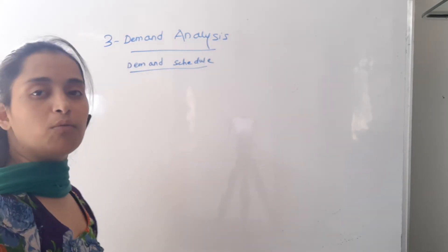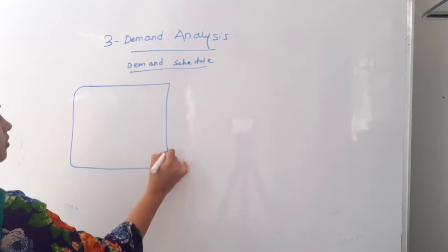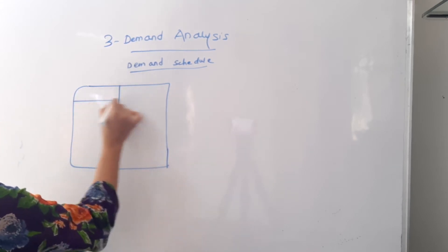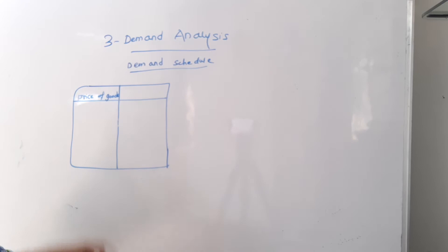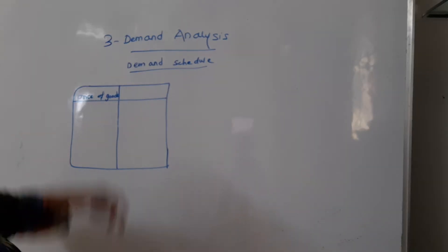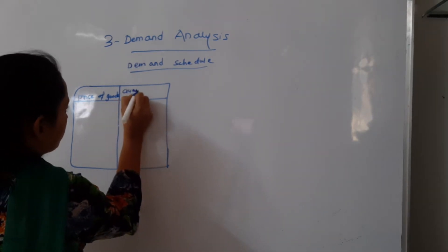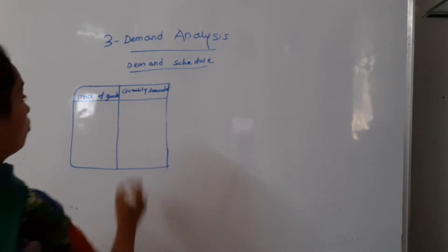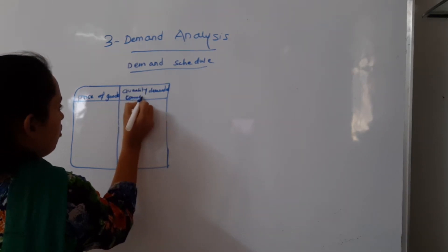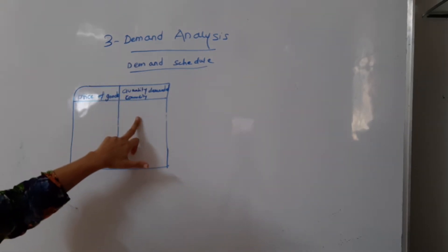Aayye dekhte hai, isi cheez ko hum log tabular format mein. For example, this is a table with two columns: prices of goods or commodity on one side, and quantity demanded on the other. Yaaha pe aajaati hai meri prices, aur yaaha pe aajaati hai quantity.